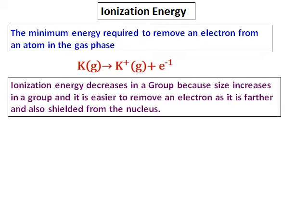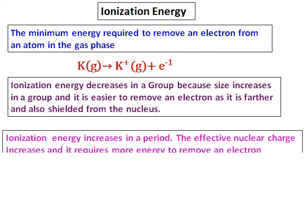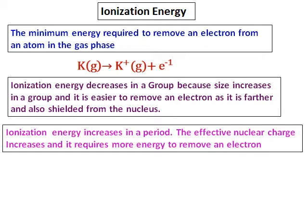The ionization energy decreases in a group because as you go down in a group, the size increases. Once the size increases, the electron is farther from the nucleus and hence it will be easier to remove it. Therefore, the energy required to remove it becomes lesser.